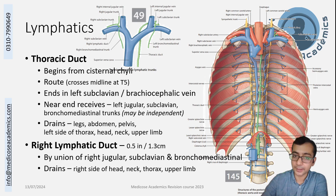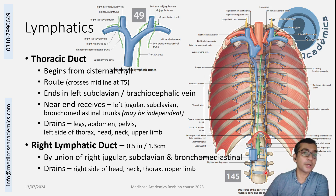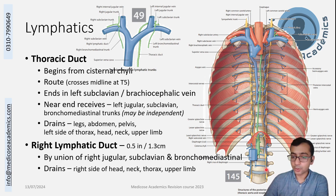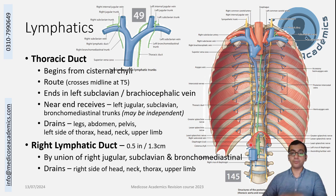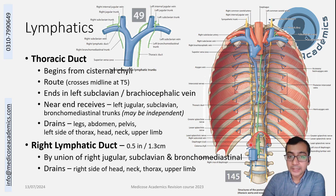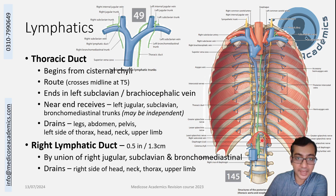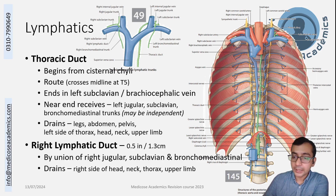All the lymphatics from the lower limbs and the abdomen are collected through a number of channels. All lymphatics below the abdomen and from both lower limbs terminate in a structure called the cisterna chyli. This is a lymphatic sac present in front of vertebrae L1 and L2, sometimes L3.